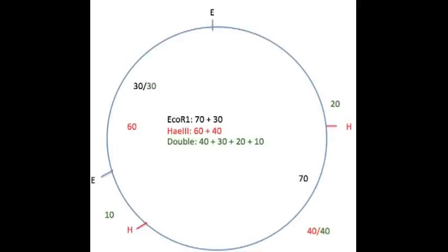In summary, starting at 12 o'clock with our EcoRI digest, we have 70 and 30 KB fragments. Then starting at the first HaeIII cut, we have 40 and 60 KB fragments. And going clockwise with the double digest, we have 20, 40, 10, and 30 KB fragments. So I think we've solved the problem.